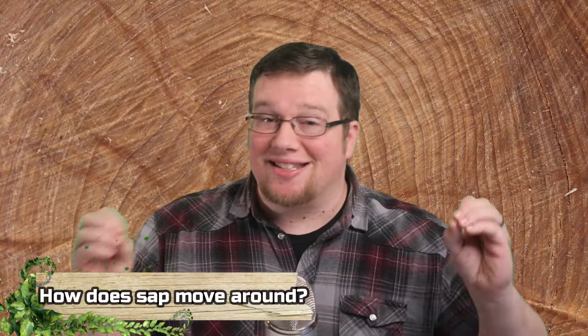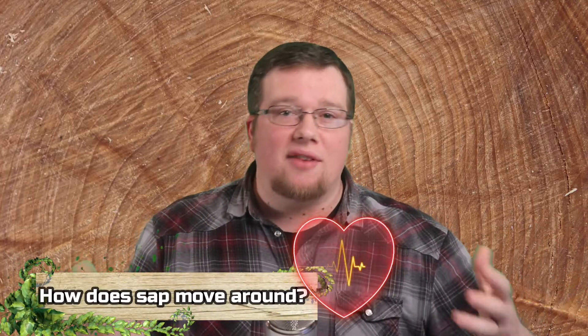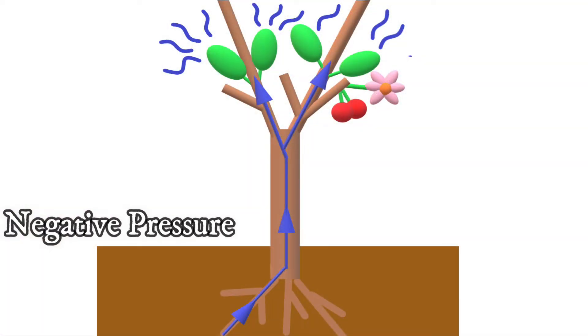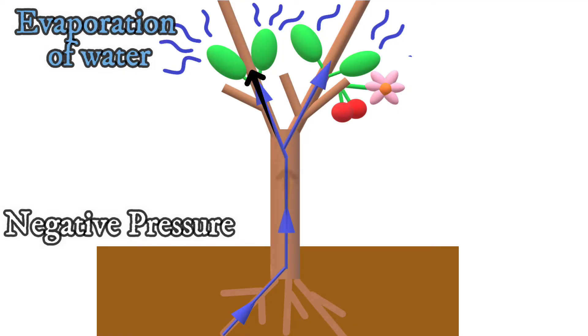Another question you might be wondering is how does sap move around? Humans have a heart which pumps and moves blood, but plants are stationary and don't have muscles or moving parts to transport their sap. Scientists are not 100% sure how plants accomplish this complicated task, but they do have widely accepted theories. In xylem, the theory is that sap moves up from the roots because of something called negative pressure. This negative pressure is created when the leaves lose water into the air through evaporation, and this water loss creates a vacuum of sorts which creates a pulling force that pulls water up from the roots.